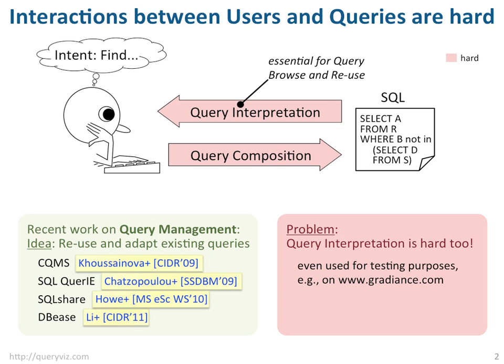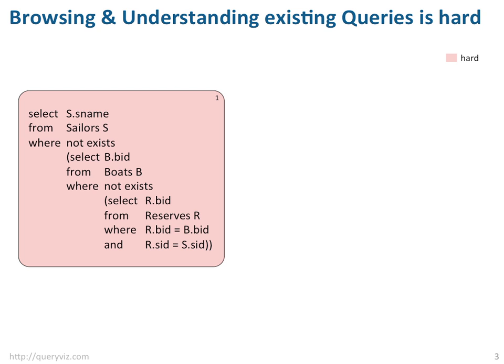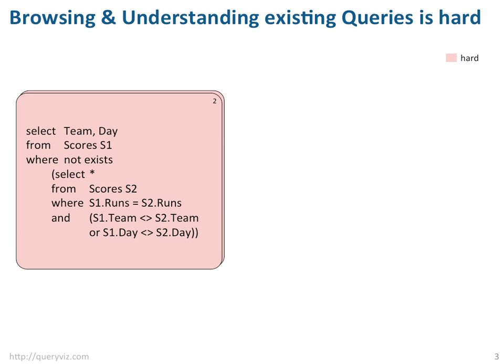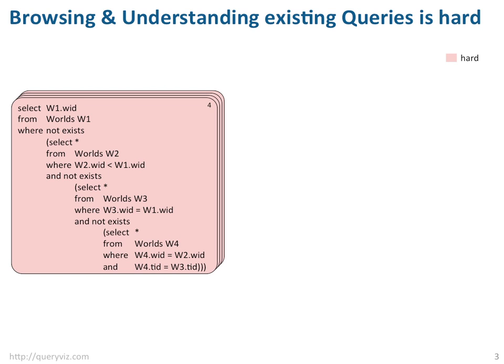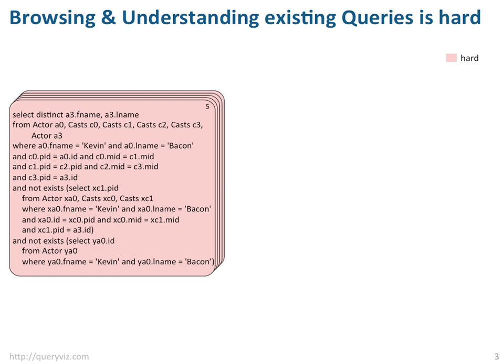Let me illustrate this challenge. Assume we browse through a log of 5 queries, and for each query we want to quickly understand its intent, because we want to choose a query as a template for our own new query. This is actually pretty hard. Understanding the meaning of an existing piece of code, especially if it's not annotated, is far from trivial.